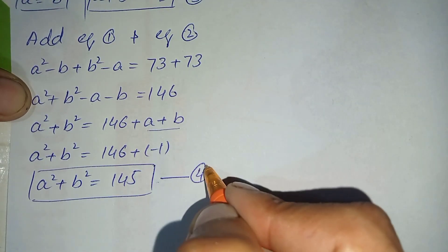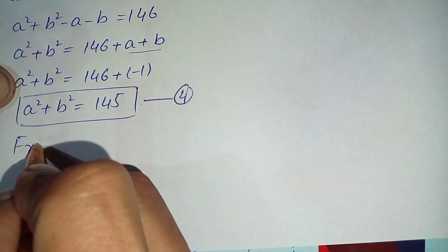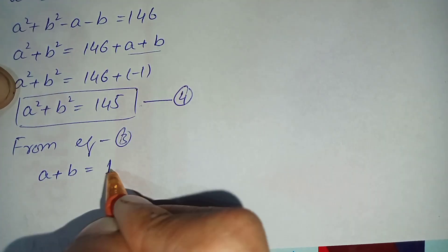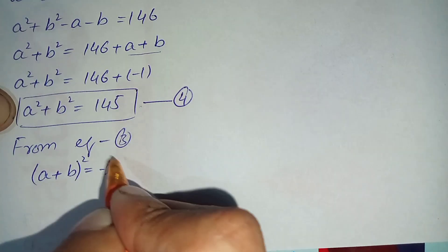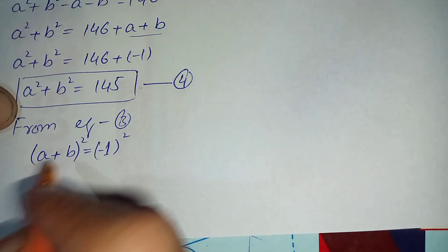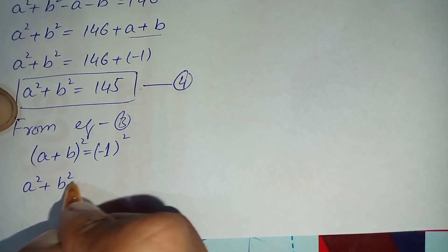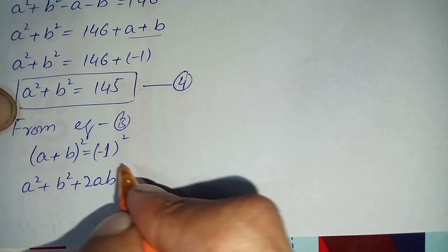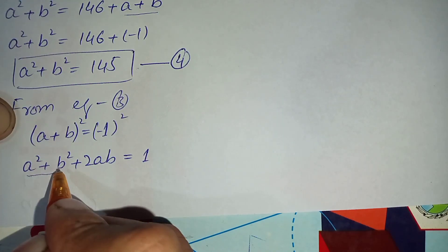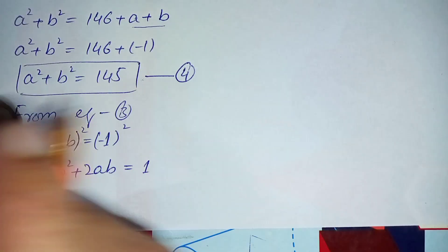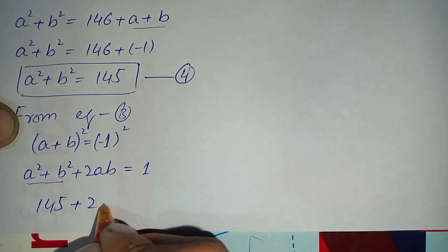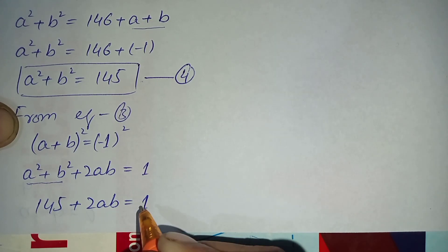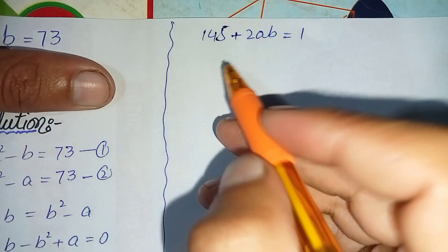From equation number three, a plus b equals minus 1. We take the square of both sides. Expanding the left side gives a squared plus b squared plus 2ab, and the right side is (minus 1) squared which equals 1. Substituting the value of a squared plus b squared from equation number four, which is 145, we get 145 plus 2ab equals 1.